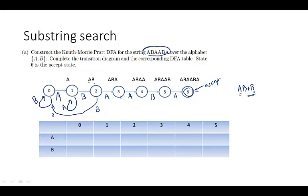Let's apply the same thing to state 3. If you're in state 3 you have seen ABA. Now if you see a B, that means you've seen ABAB from the text. We look for the longest suffix which is also a prefix. In this case, AB is the longest suffix which is also a prefix, so we can go back to state AB — which is state 2.